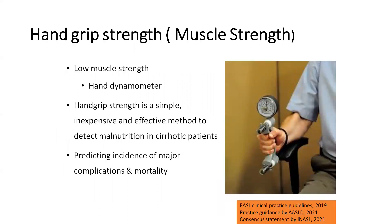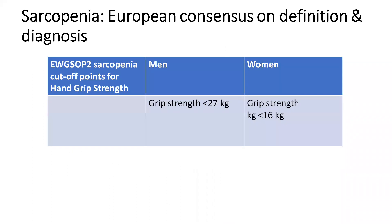Now I will talk about simple bedside tests for assessment of muscle strength to determine whether the patient has sarcopenia. The first is hand grip strength, assessed using a handheld dynamometer. The patient sits in a chair, places the arm in the correct position, and presses the dynamometer as hard as possible. We take three readings from the dominant hand and use the highest value, expressed in kg. A grip strength less than 27 kg for males and less than 16 kg for females signifies poor muscle strength and sarcopenia.